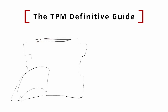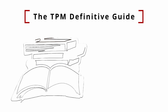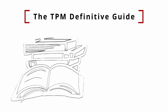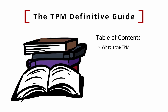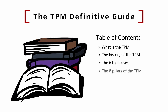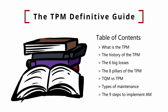The tutorial will be divided into chapters, and in the description you will find documents and checklists to download to have a written reference and to be guided in the implementation of TPM step-by-step. The following topics will be discussed: What is TPM and why it is important, the history of TPM, the Six Big Losses, the Eight Pillars of TPM, TQM vs TPM, the different types of maintenance, the nine steps to implement autonomous maintenance, and practical tips for TPM.